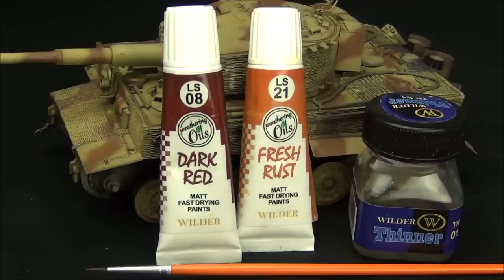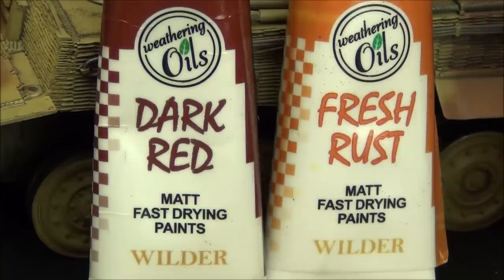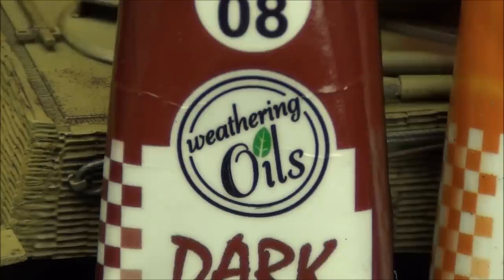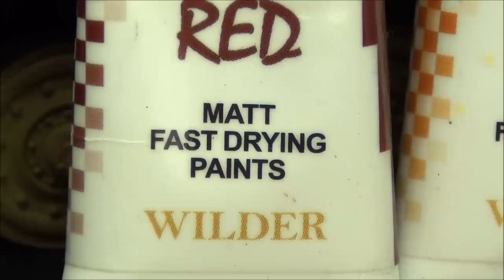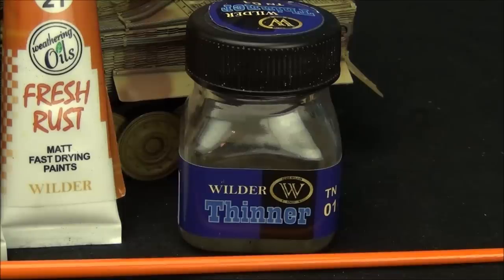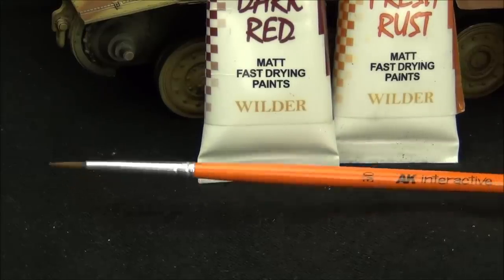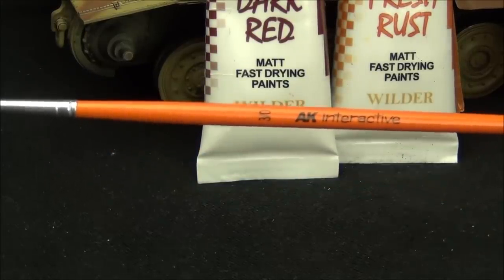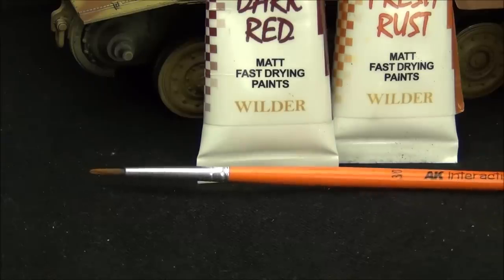For the rust effects I've selected two oil paints. I have the Wilder colors dark red and fresh rust. These are very similar but a little bit different because I want some variation in my natural rust effects. These are weathering oils meant to be used on plastic, so they dry a little bit faster and with a nice matte finish. I'm also using Wilder enamel thinner to thin these down and blend them out. Since people always ask about my brushes, we're using this AK Interactive 3/0 round brush to apply the oils.